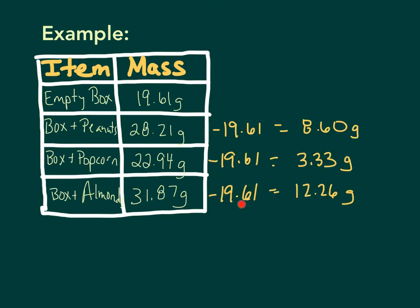Now I have subtracted the empty box mass from the box and peanuts. I got 8.60 grams of peanuts, 3.33 grams of popcorn, and 12.26 grams of almonds. So when I'm comparing the equal numbers of peanuts, popcorn, and almonds, these are the masses that I end up getting.